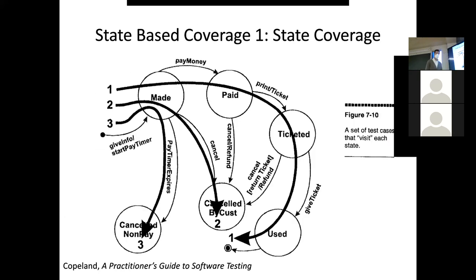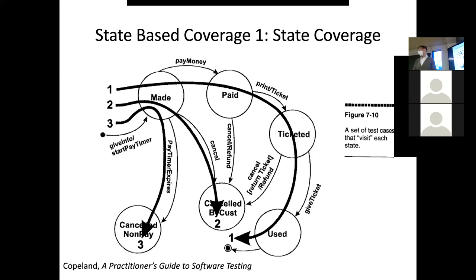For example, we talked last time about a system for buying an airline ticket where you have different states: the reservation is made but not paid for, it's paid for, it's actually ticketed — and there was a long time, probably still is in some cases, an explicit step for ticketing. Then there are different states after that: canceled before payment, canceled after payment, canceled after being ticketed, or where it's been used. These are all different states you could be in with respect to an airline reservation. State coverage would have you go through each of these states.